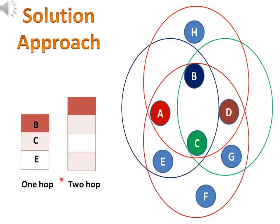And the two-hop list contains all the adjacent nodes of one-hop list nodes, i.e., nodes H, D, G, and F.